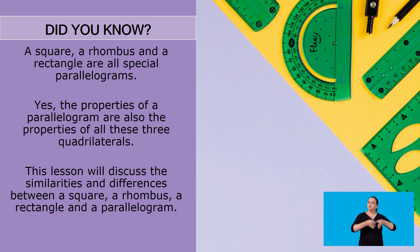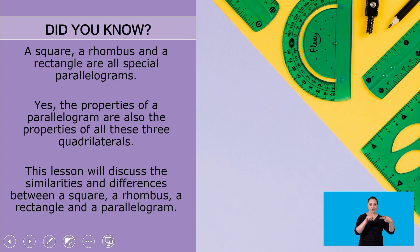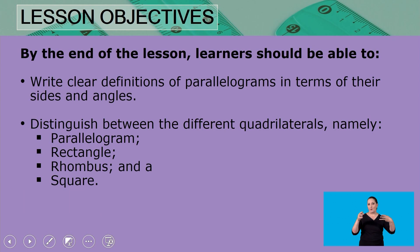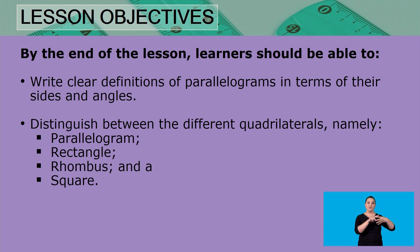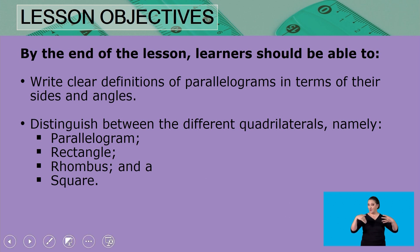This lesson will discuss the similarities and differences between a square, a rhombus, a rectangle and a parallelogram. By the end of this lesson, you should be able to write clear definitions of parallelograms in terms of their size and angles, and distinguish between the different quadrilaterals: namely the parallelogram, rectangle, rhombus and a square.